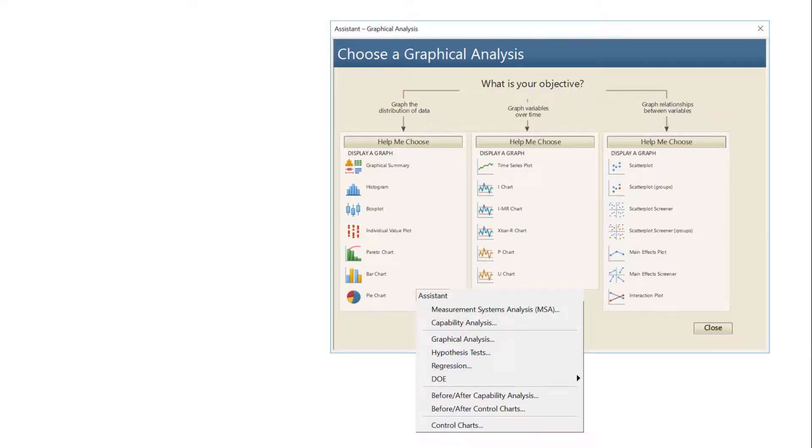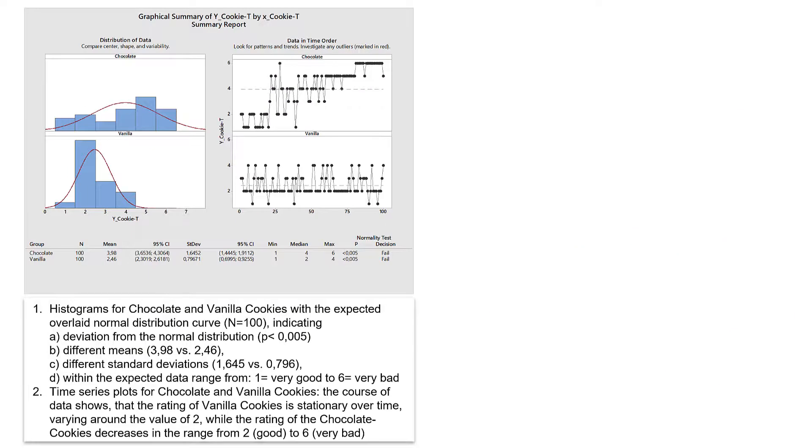First I create a graphical summary again with the Minitab assistant. Here I divide my sample by cookie type in chocolate vs vanilla cookies. The separated histograms for chocolate and vanilla cookies with the expected overlaid normal distribution curve again indicate a deviation from the normal distribution, different means and different standard deviations within the expected data range from 1 equals very good to 6 very bad.